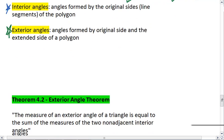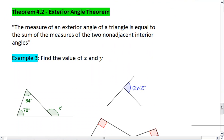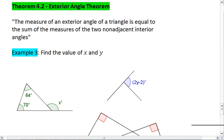But this brings us to theorem 4.2, the exterior angle theorem. What this theorem tells us is the measure of an exterior angle of a triangle is equal to the sum of the measures of the two non-adjacent interior angles. This is probably easiest to show with some examples.